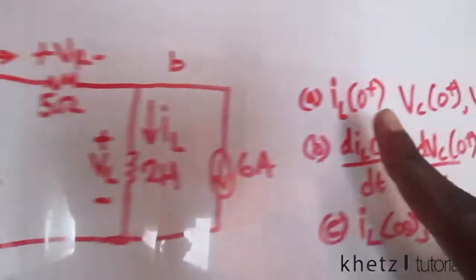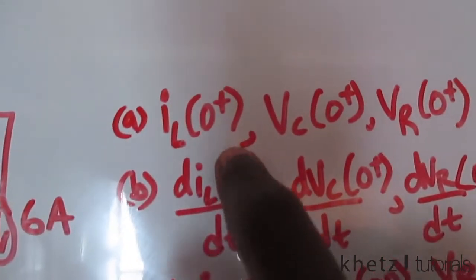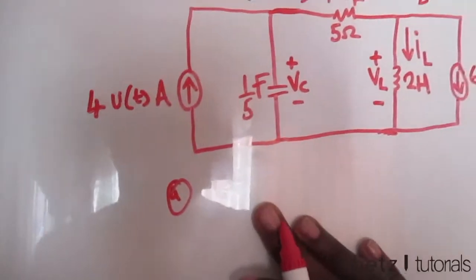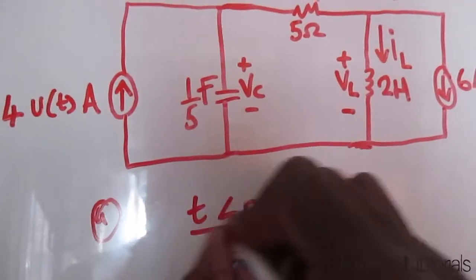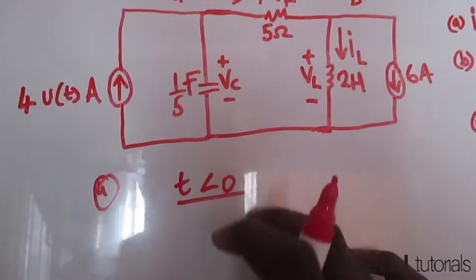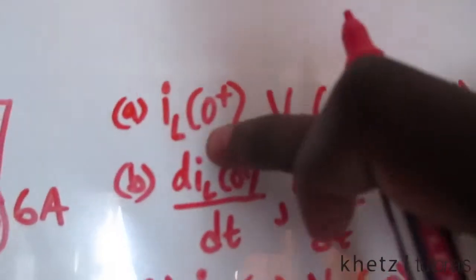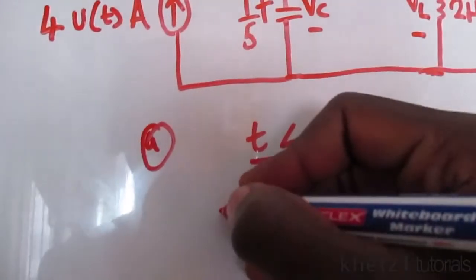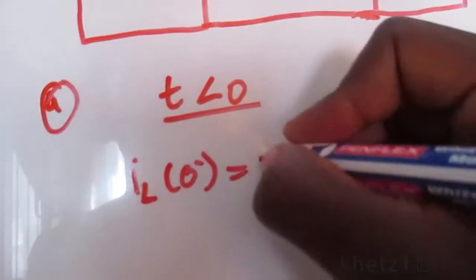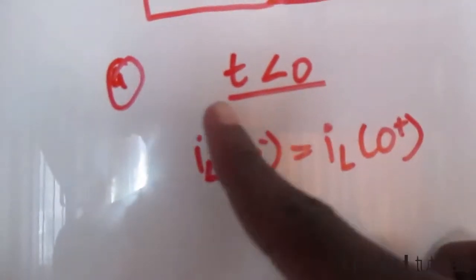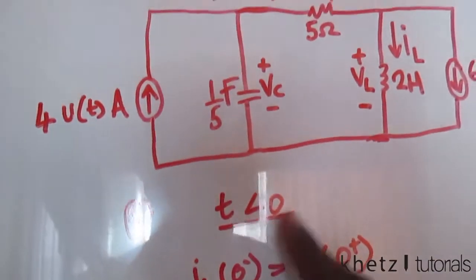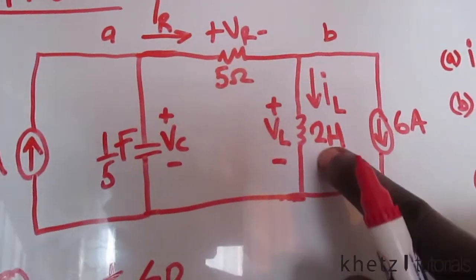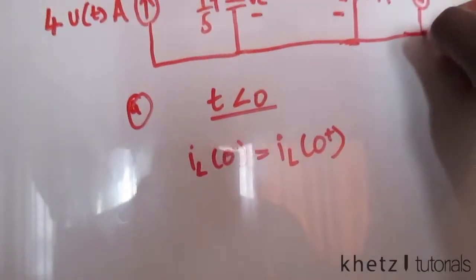For the first part of the question we are asked to find the initial inductor current, the capacitor voltage just after zero, and the resistor voltage just after zero. To do that we look at the time where this circuit was in steady state, or time less than zero. The inductor current cannot change abruptly, as well as the capacitor voltage, so the inductor current just before zero equals the inductor current just after zero.